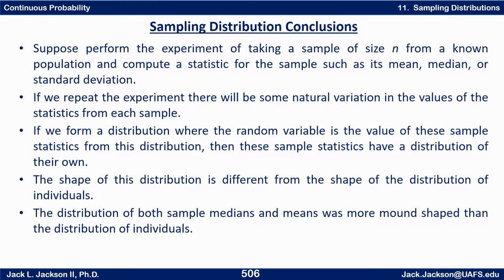So again, if we take the experiment of taking a sample of size N from some known population and compute a statistic for the sample — such as the mean, median, or standard deviation — and repeat the sample experiment, we notice there will be some natural variation in the values of the statistics from each sample. The sample statistic may not be the same as the population parameter. Furthermore, these sample statistics have a distribution of their own. The shape of that distribution is different, usually, from the distribution of individuals. The distribution of both sample means and medians was more mound-shaped than the distribution of individuals.